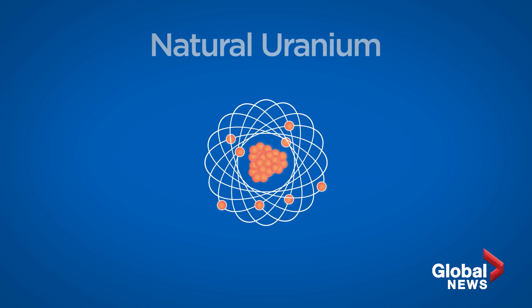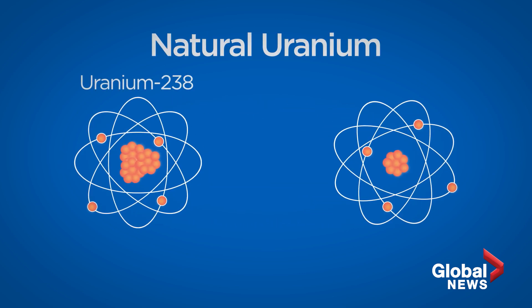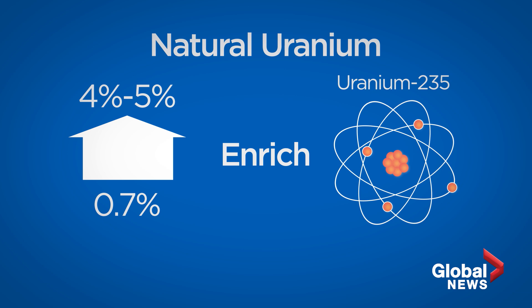Natural uranium is a mix of two isotopes: uranium-238, accounting for more than 99%, and uranium-235, which is less than 1%. The difference in mass between these two allows them to be separated, and makes it possible to increase, or enrich, the percentage of U-235 from its natural level of 0.7% to 45%.